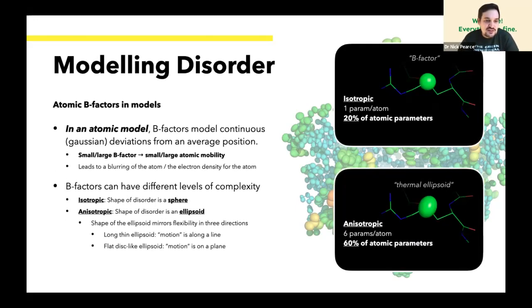So atomic B-factors in models. B-factors in a model represent the blurring of an atom. So the atom isn't still, it's moving around its average position. Our B-factor model is a Gaussian deviation from that position. A small B-factor means small mobility, a large B-factor means large mobility. There are two types that we can use, chiefly in macromolecular crystallography.